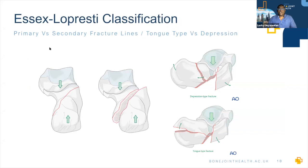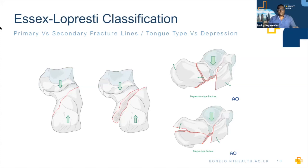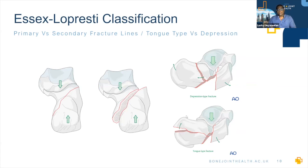There are a couple of classifications, not hugely useful clinically but important to know. The Essex-Lopresti classification describes primary and secondary fracture lines. The talus drives down and shears off the medial sustentaculum — that's your primary fracture line, which is constant for most calcaneal fractures, hence it's called the 'constant fragment.' The secondary fracture line either exits the top, allowing the articular surface to become depressed — giving a depressed fracture — or travels along the whole posterior body and exits the back, creating a tongue-type fracture that gets pulled up by the Achilles.